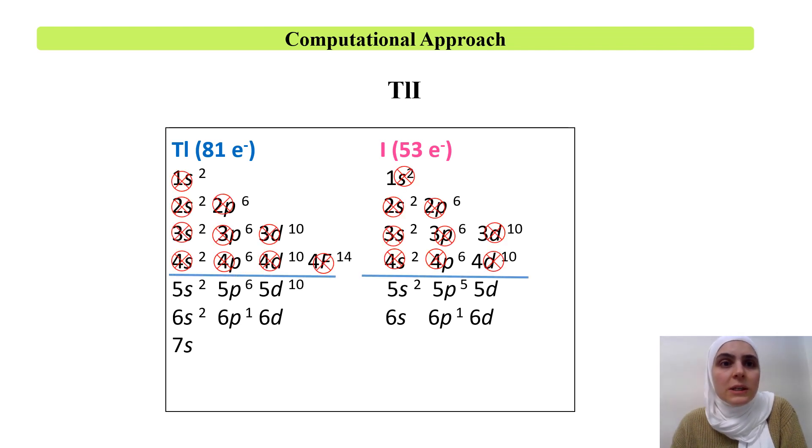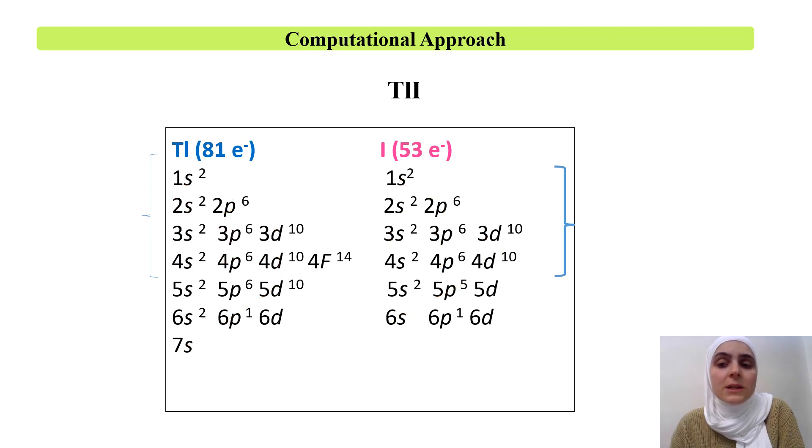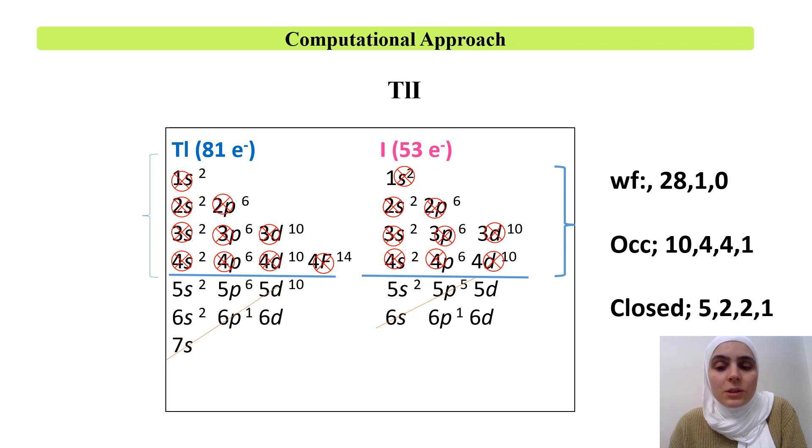The horizontal line you see here is the boundary between the frozen electrons represented by the cross inside the circle and the treated electrons up to the red diagonal line. So, here 60 core electrons which are frozen electrons are considered in TL atom and 46 in I atom and as a total 23 valence electrons were treated in this molecule with 10 occupied shells in symmetry 1, 4 in symmetry 2 and 3 and one occupied in symmetry 4 and for the closed we had considered 5 orbitals to be in the closed symmetry 1, 2 in symmetry 2 and 3 and one closed orbital in symmetry 4.